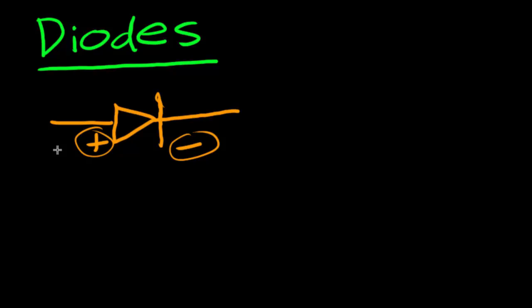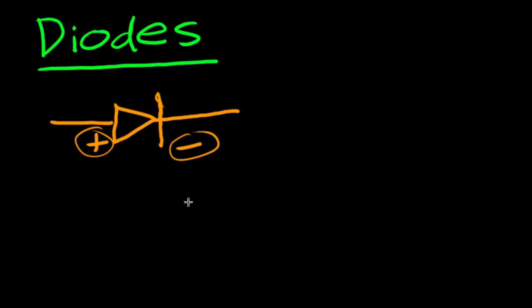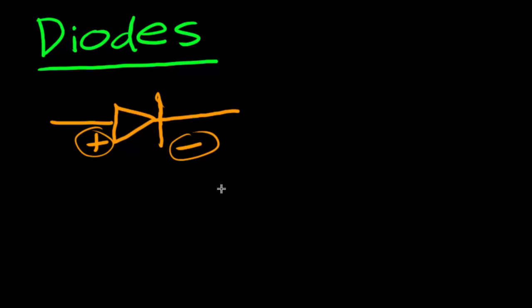A diode allows current to flow from the anode to the cathode. However, if current tries to flow in the opposite direction — from the cathode to the anode — the diode will try its hardest to stop that current. Whenever current tries to flow the opposite way, the diode acts like an open switch; there's almost no connection there. That's what an ideal diode would do.